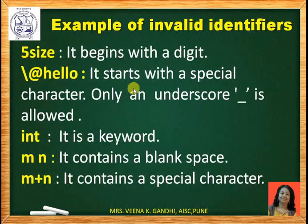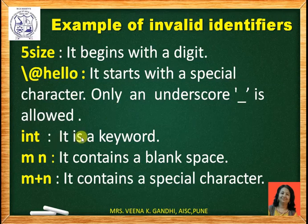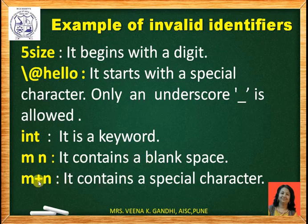Examples of invalid identifiers: '5size' — invalid because it begins with a digit; '@hello' — invalid because it starts with a special character; only underscore is allowed. 'int' — int is a reserved word or keyword, and keywords are not allowed as identifier names. 'M N' with a blank space — invalid because it contains a blank space. 'M+N' — invalid because it contains the special character plus sign.